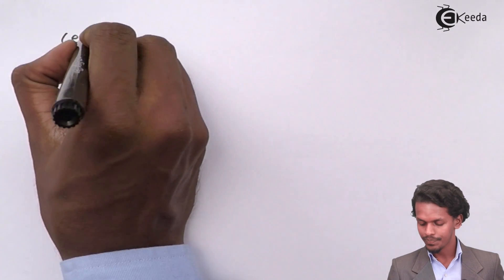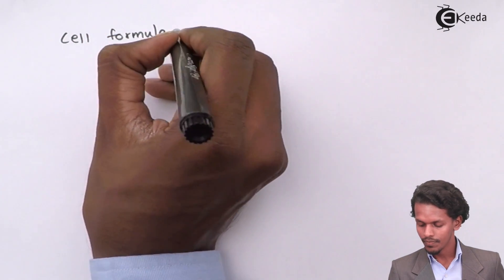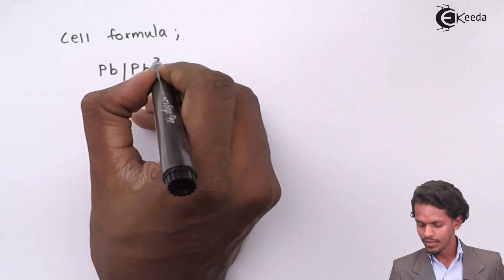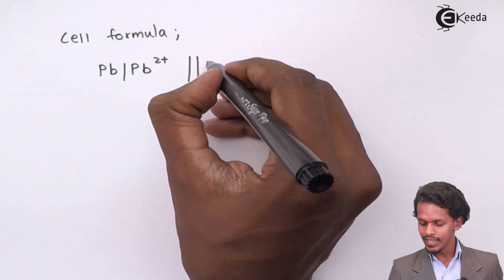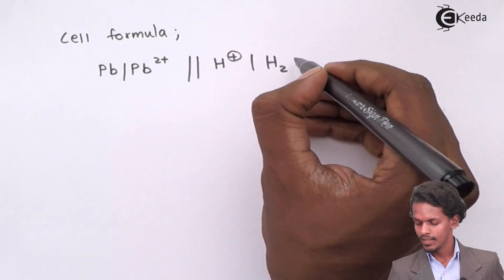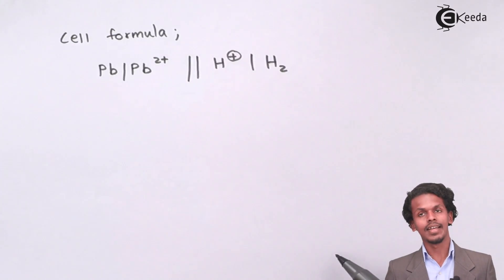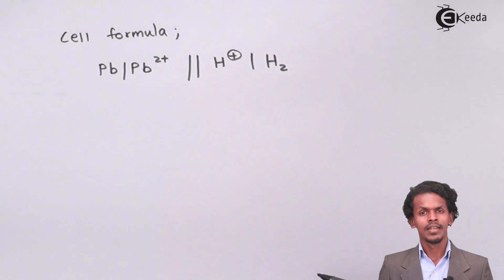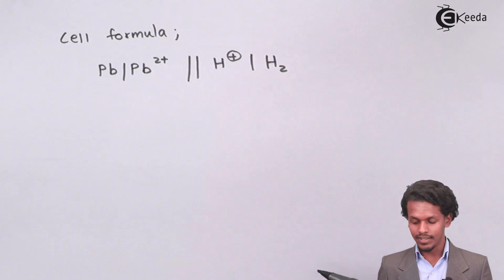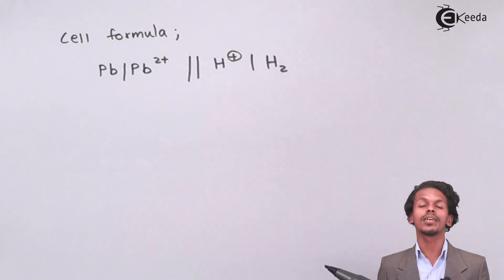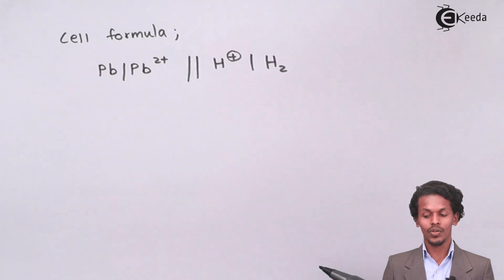Since H2 is acting like a cathode and Pb is acting like an anode, I could write the cell formula as Pb converting into Pb2 plus, and H plus, H2 is present in gaseous form. We have to apply a reference electrode because H2 is acting like a reference electrode with a value of 0.0.